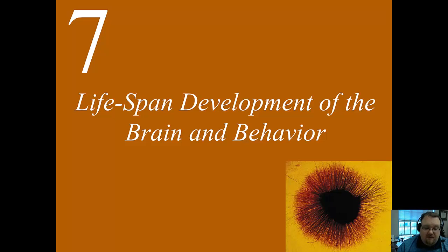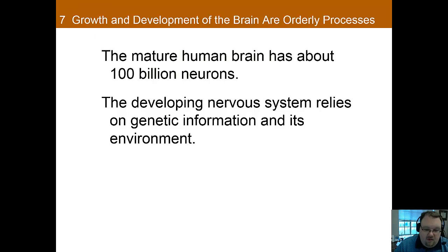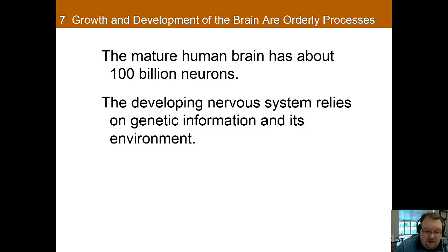We're going to cover a lot of information in this chapter. We've already touched on some development, but now we'll get much more into the nuts and bolts. Our brain, though not all that big or even all that heavy, is a really amazing organ. It's estimated that there are a hundred billion neurons in the mature brain — and that's after many neurons have died off, which you'll soon learn about. The development of the brain is a biological wonder, and a very complex one, with many genetic and environmental factors important in both proper and problematic development.